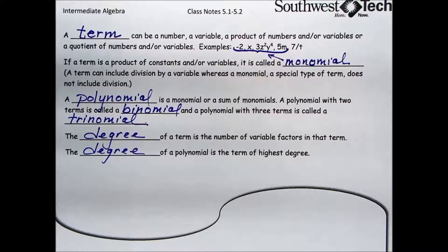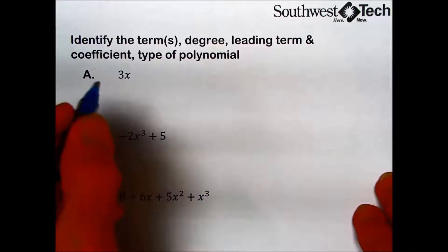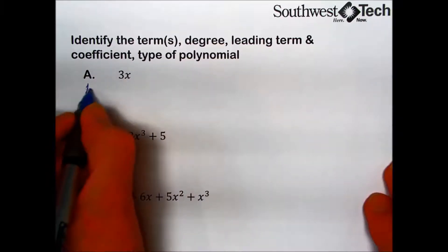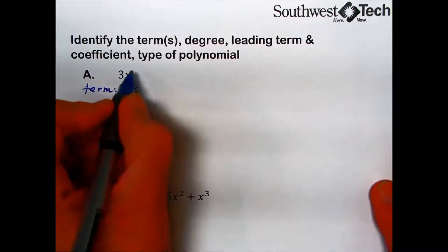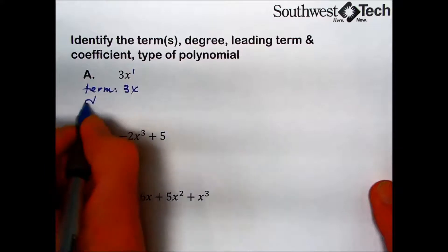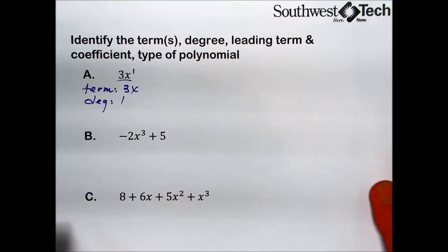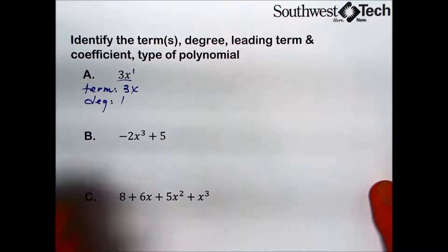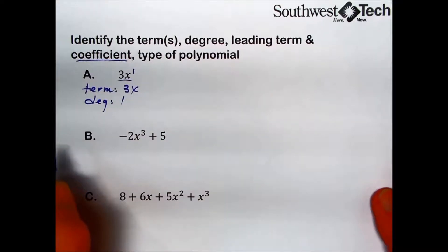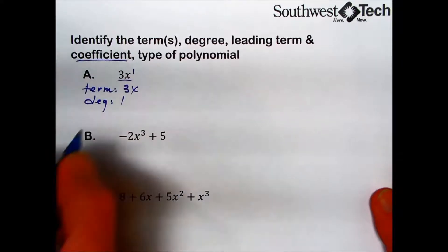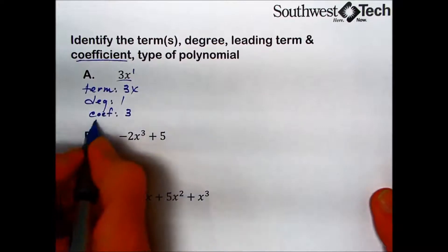Let's put this vocabulary to use. In this first set of problems, they're asking us to identify the terms. There is only one term, so the term here is 3x. The degree, by definition, is the number of variable factors — this is understood to be to the first power, so the degree is 1. Since there is only one term, the leading term is 3x. The coefficient is the numerical portion, so the coefficient is 3, and since there is only one term, we would call this a monomial.